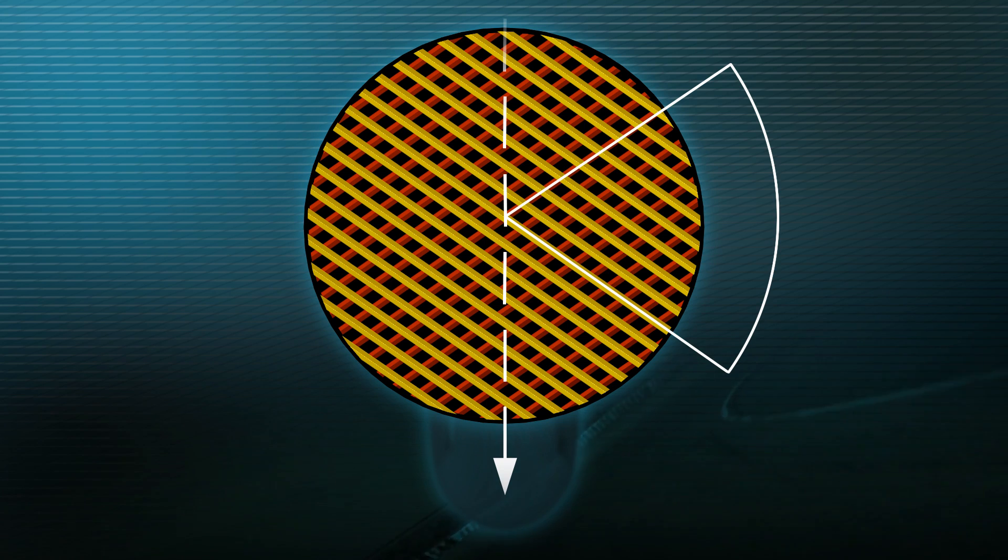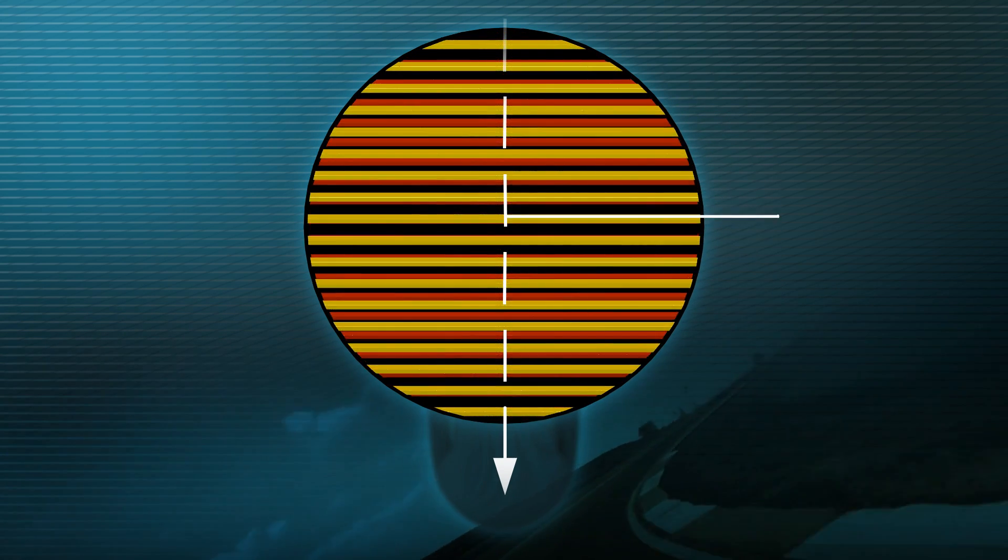To take an extreme example, the casing would not be very rigid if the two plies were laid parallel to each other.